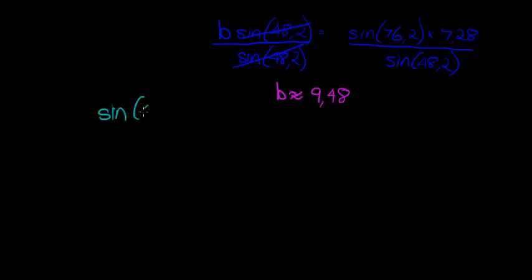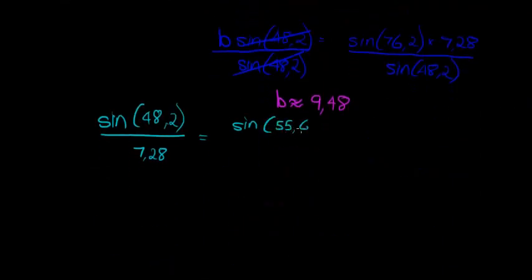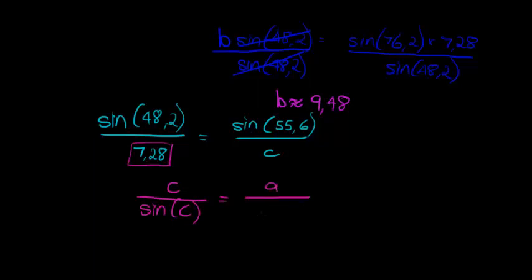So, I've got sine of A, which we said was 48.2, divided by side length of A was 7.28, is equal to sine, now I'm working with this opposite pair there, so I'm working with this angle, 55.6, and I'm trying to calculate C. I can go through the motions to multiply both sides with C and divide both sides, so another way that I can maybe just do it simpler is to switch around my formula from the beginning.